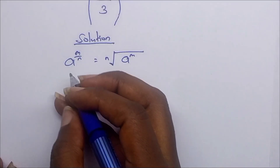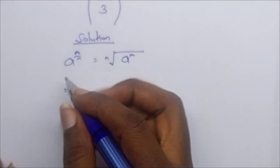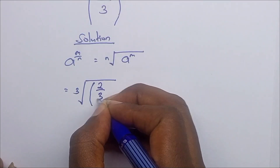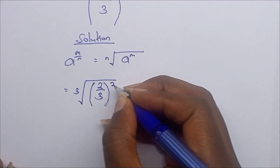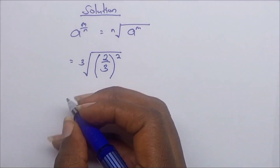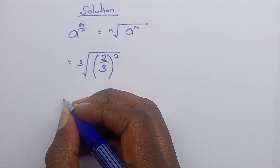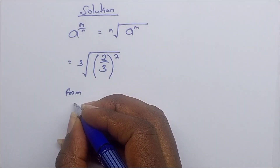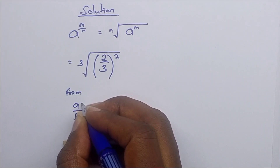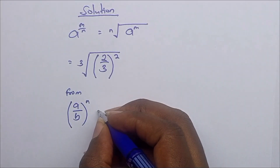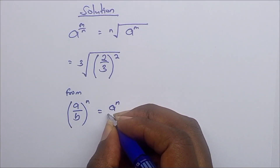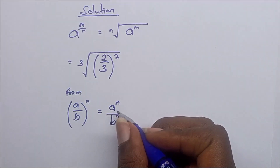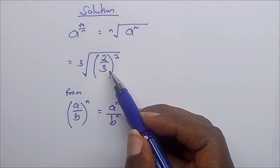Therefore, this equals the cube root of (2/3) to the power 2. Also, (a over b) to the power n is the same as a to the power n over b to the power n — we distribute the powers.